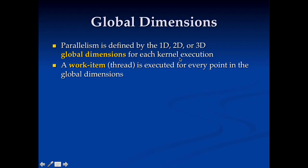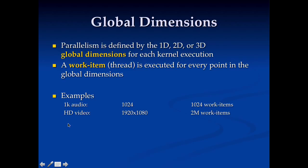For example, if I want to process 1,000 samples of audio with one thread per sample, I'll set my global dimensions to 1,024 work items. If I want to process a high-definition video frame, that's 1920 by 1080 — about 2 million work items — so I specify my global dimensions as 1920 by 1080, giving me one thread for every pixel in the video.